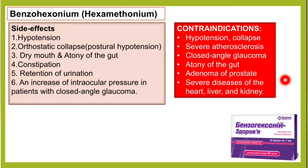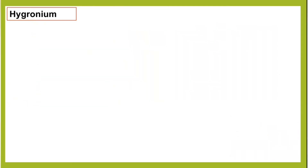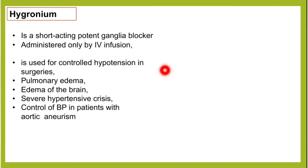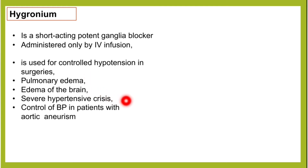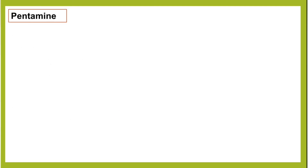Next is hygronium. Hygronium is a short-acting, potent ganglia blocker administered only by IV infusion. It is used for controlled hypertension in surgeries — the main function to remember for MCQs. It is also used in pulmonary edema, edema of the brain, severe hypertensive crisis, and control of blood pressure in patients with aortic aneurysm.